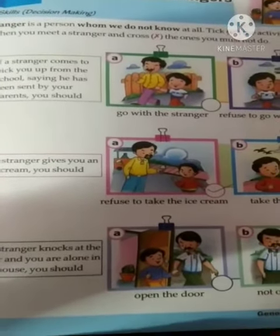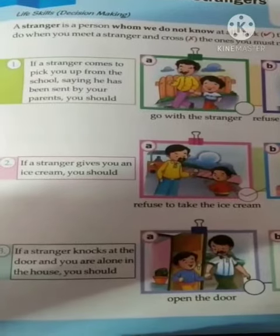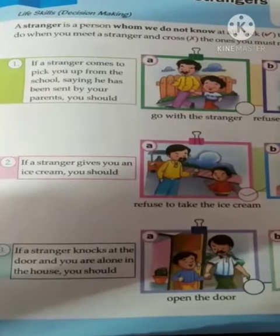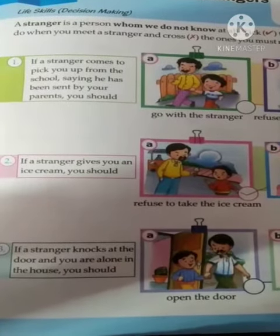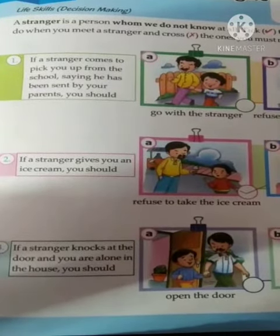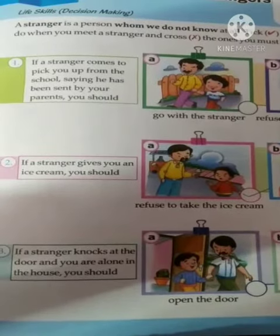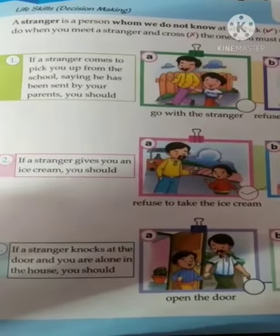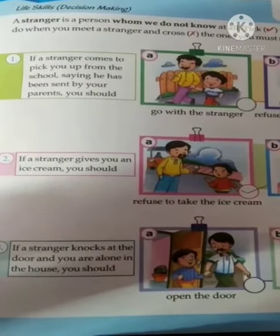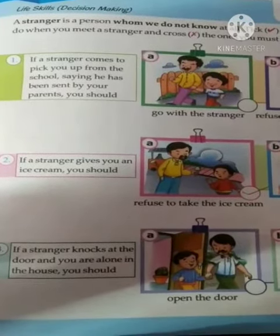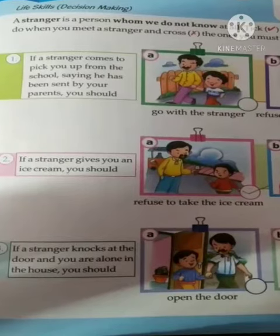First activity: if a stranger comes to pick you up from school saying he has been sent by your parents, you should — the correct answer is B — refuse to go with the stranger. Kabhi bhi kisi ke saath mein nahi jana chahiye.